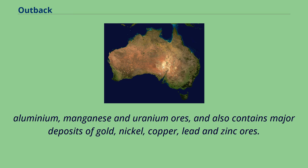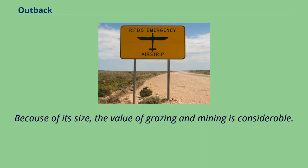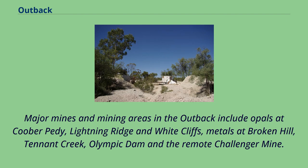The outback also contains major deposits of gold, nickel, copper, lead and zinc ores. Because of its size, the value of grazing and mining is considerable. Major mines and mining areas in the outback include opals at Coober Pedy, Lightning Ridge and White Cliffs; metals at Broken Hill, Tennant Creek, Olympic Dam and the remote Challenger Mine.